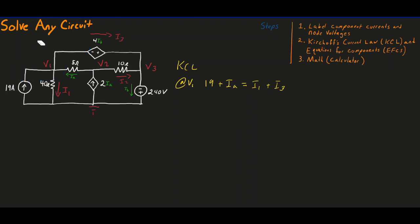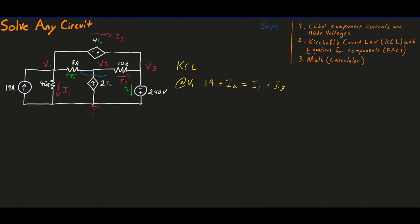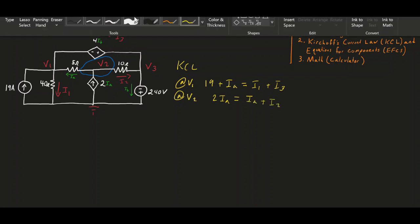So we can move on to V2. Let's go ahead and circle our V2 node here. So this is our V2. At V2, we have 2IA pointing towards that node. So we're going to say 2IA is equal to IA and I2, which are pointing away from the node. So we'll say IA plus I2. So let's move on to the next node.